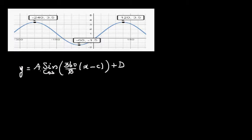In this formula, d is the baseline, c is the starting point, b is the period, and a is the amplitude. Writing the coordinates of the maximum and minimum will basically give you everything.